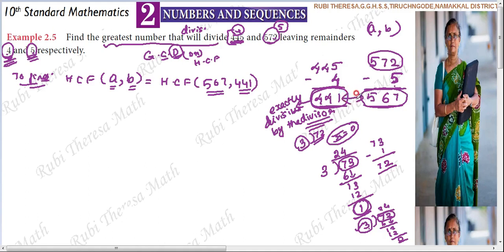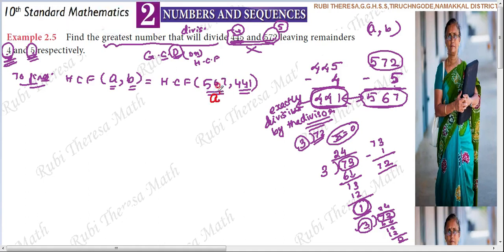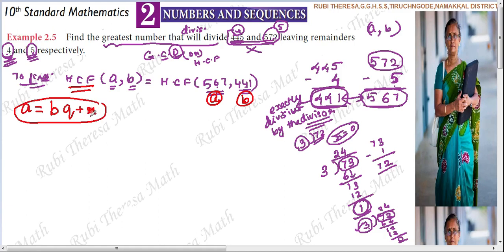So if we are going to find these two numbers, we are going to find the HCF of 567 and 441, not 445 and 572. These two are the hint. We are going to find HCF of 567 and 441. A equals BQ plus R, and to find HCF we have to repeatedly use this divisional lemma statement unless and until your remainder becomes 0. B should not be equal to 0. Your remainder should be greater than or equal to 0 and less than the divisor.